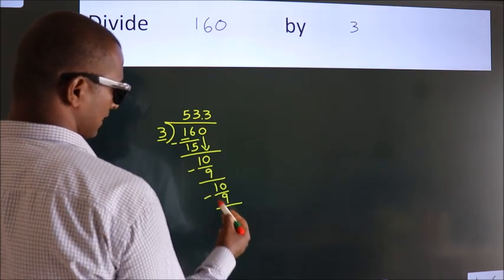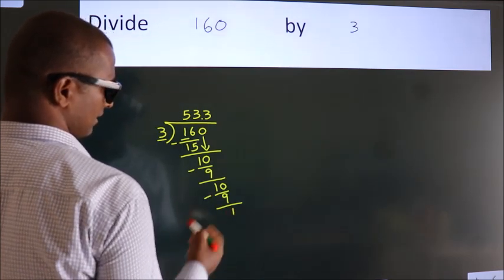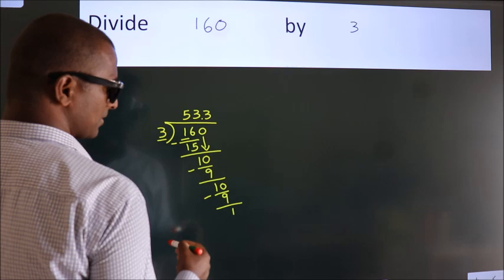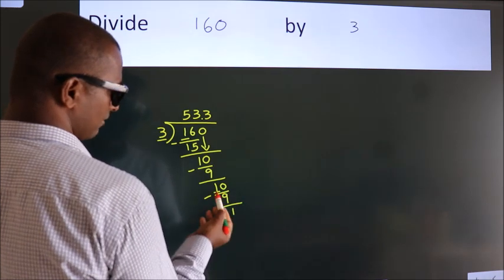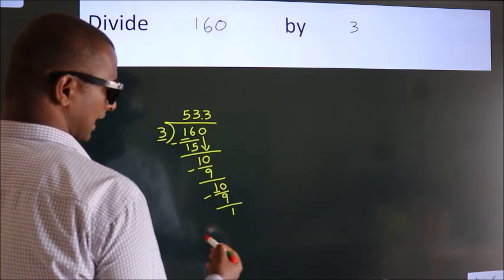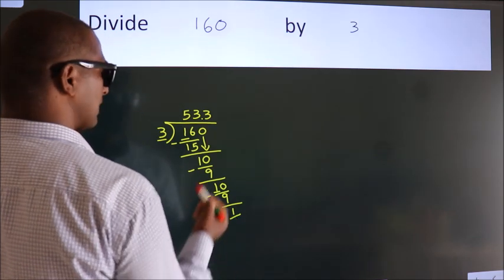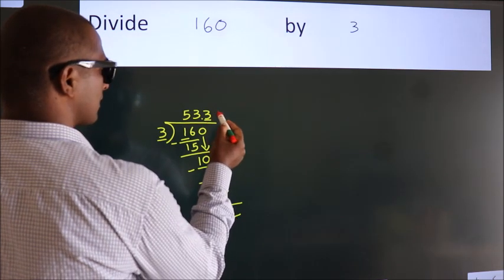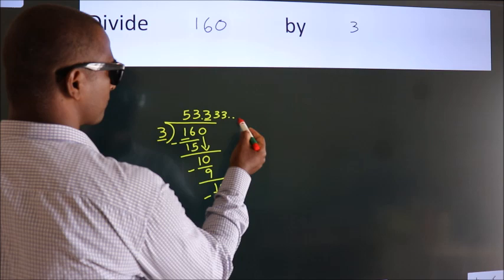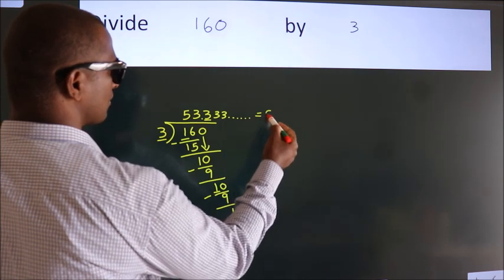Now we subtract. We get 1. Now you observe, we had 1 here and we got 1 again. That means this number keeps on repeating. So this is our quotient.